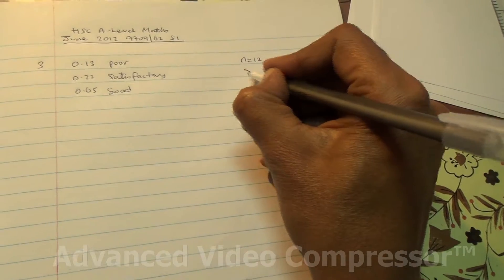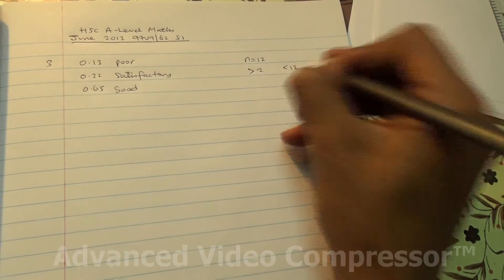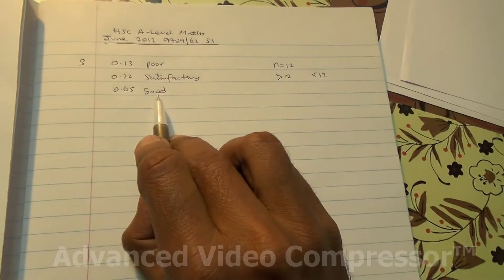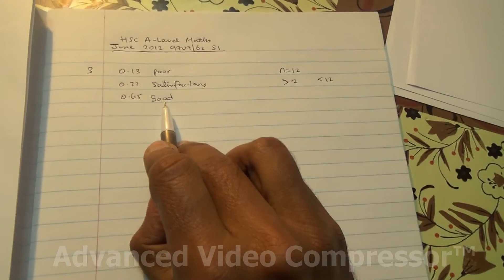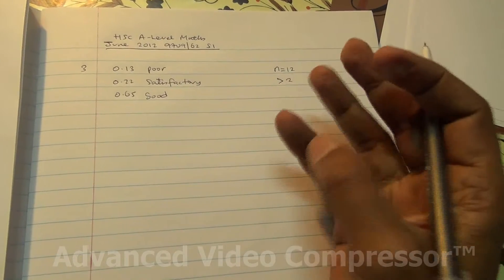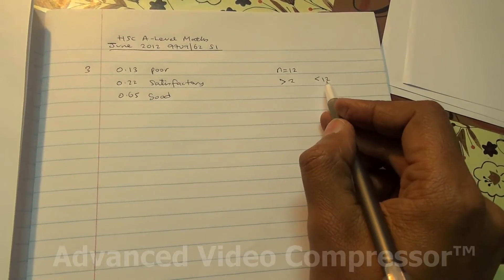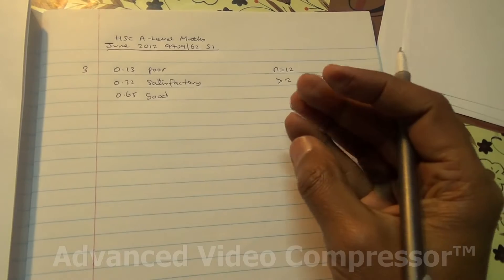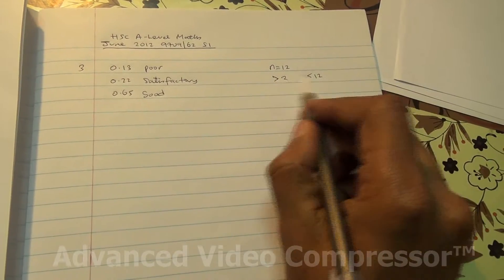So more than 2, probability that more than 2 and less than 12 rated the food as good. Now, that means if it is more than 2, it must be 3, 4, 5, 6, 7, 8, and less than 12 means 11, 10, 9, 8, and so on. So in between these two,